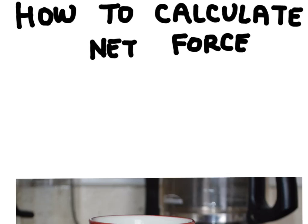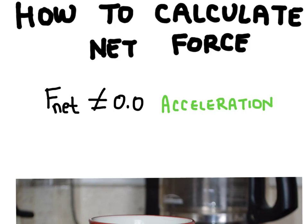The net force is the sum of all the forces acting on an object. Usually we use the symbol capital F with a subscript net to indicate the net force. When the net force on an object is not equal to zero, then the object will accelerate. When the net force is equal to zero, then the object will not accelerate and it will either remain at rest or remain at its current velocity.